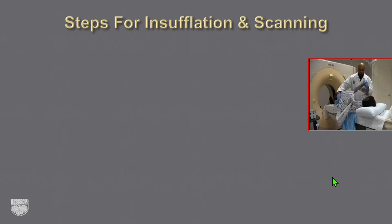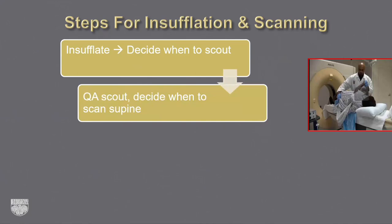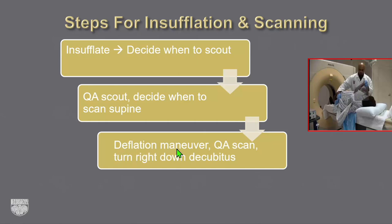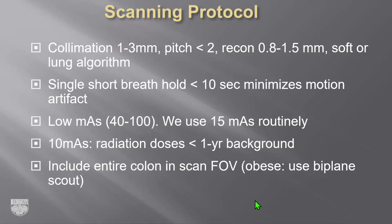Now the steps for insufflation — teaching techs how to scan. The steps: insufflate and decide when to scout; perform quality assurance of the scout and decide if more gas is needed; decide when to scan. We teach a brief deflation maneuver — disconnect tubing from the machine for about three seconds counting 1,000, 2,000, 3,000 — patient comfort really improves. Then quality assure the scan. Our preference is supine and right-side-down decubitus, as the sigmoid colon is the most problematic area for distension. Re-insufflation takes about a minute or less.